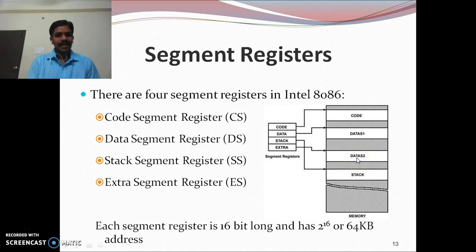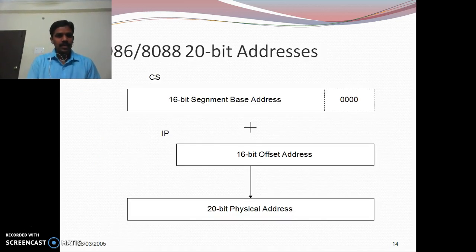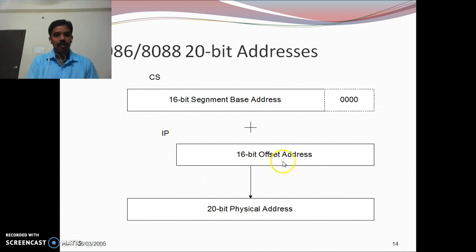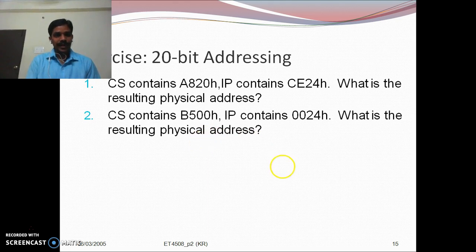The extra segment is also called the second data segment. Each segment has a 16-bit base address, but the physical address used to access memory is always 20 bits. To calculate the 20-bit physical address from a 16-bit base address, you shift the base address left by 4 bit positions, then add the instruction pointer as a 16-bit offset. This always gives you the 20-bit physical address.